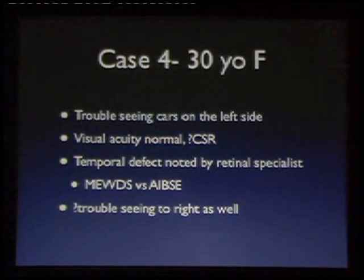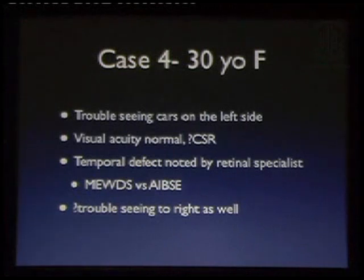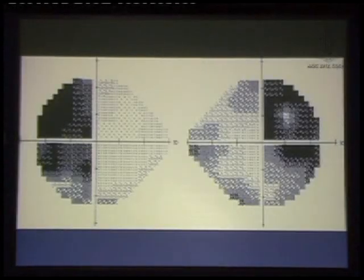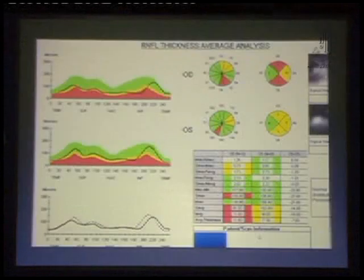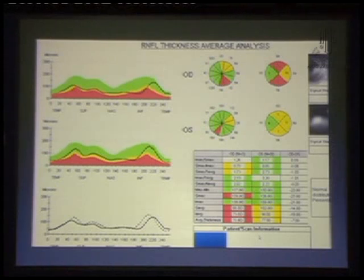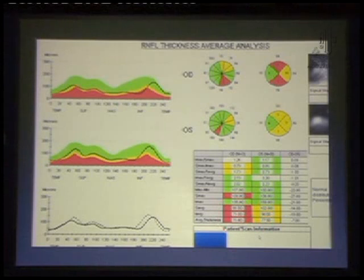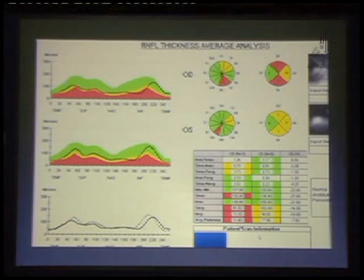How about this patient? A younger woman who noted she was having trouble seeing cars on her left side while driving. Her acuity was normal. It was thought she might have CSR; a retina specialist felt that because of her low myopia she could have a myopia-associated condition like blind spot enlargement or MUDES. But then it was felt she was having trouble seeing to the right as well. Her visual fields show a dramatic bitemporal hemianopia. She underwent an MRI scan of the brain and had a pituitary adenoma with definite chiasmal compression and thinning of her chiasm as well. When her RNFL was measured, she had significant thinning down to 71 microns in one region and 78 microns in another — rather concerning when you look overall at her retinal nerve fiber layer that there might be a lesser chance of recovery.